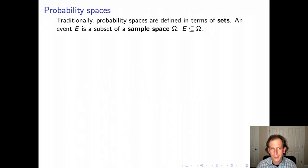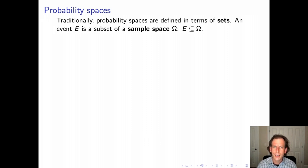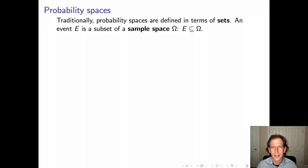We'll start off with probability spaces, which are traditionally defined in terms of sets. You start off with a sample space omega, and an event — for example, a die coming up on the number four, a coin coming up heads, or the next word out of my mouth being the word 'angel'. Any of these is an event in the sample space, and an event is simply a subset of the sample space.